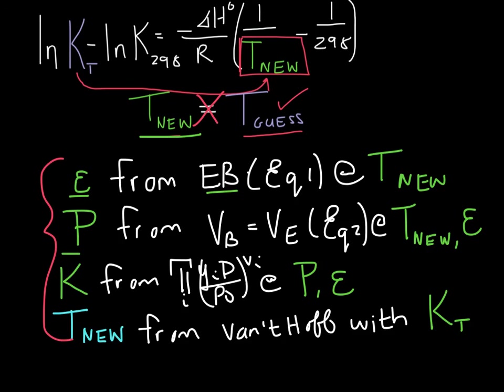Recalculate pressure from our constant volume condition. Recalculate K from the fugacity relationships at the pressure and epsilon the new values.